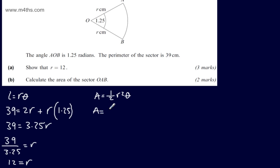So this is going to be one-half multiplied by the radius squared. 12 squared is 144, and we're going to multiply that by 1.25. So we're going to have 72 times 1.25, so the area is going to be 90 centimetres squared.